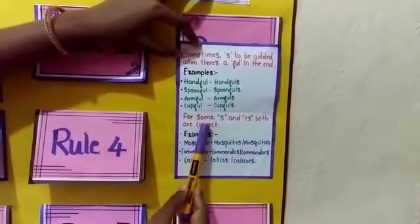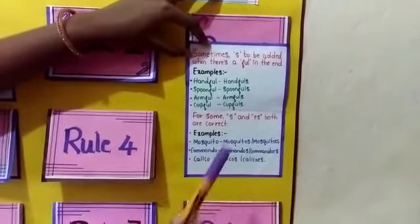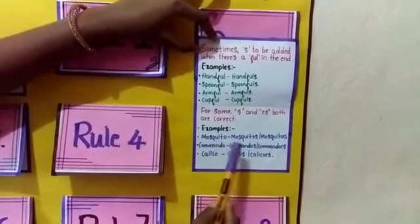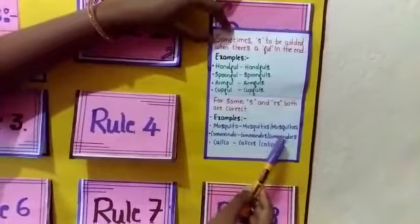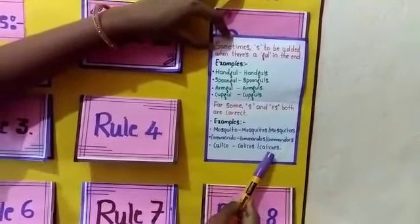Another one: for some, S and ES both are correct. Examples: mosquito-mosquitos/mosquitoes, commando-commandos/commandoes, calico-calicos/calicoes.